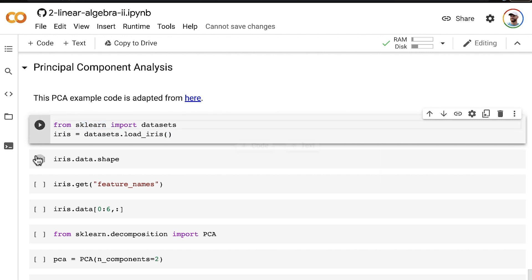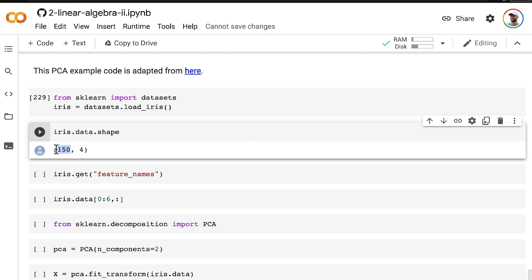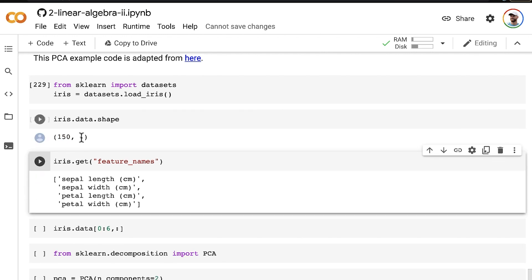And let's have a look at the data. So it consists of 150 rows and four columns. And those four columns correspond to four features,